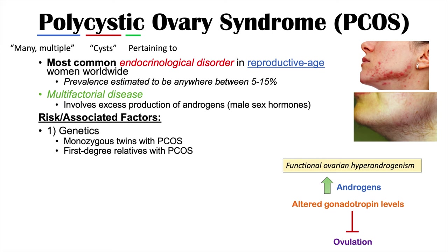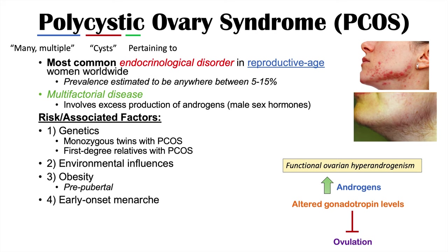The second risk factor is environmental influences, tied in with the third risk factor of obesity, especially prepubertal obesity — obesity before the onset of puberty. Another risk factor is early onset menarche, which is more of an associated factor; individuals with earlier onset of menarche are more likely to have PCOS. The fifth risk factor is being large or small for gestational age — the extremes of birth weight or size.